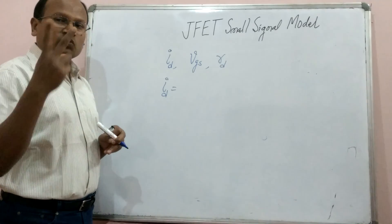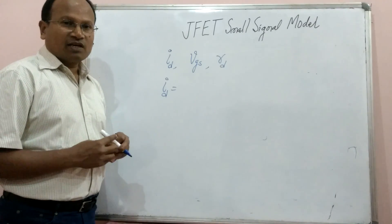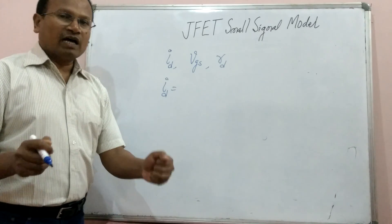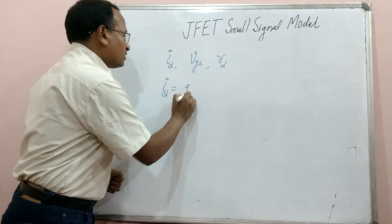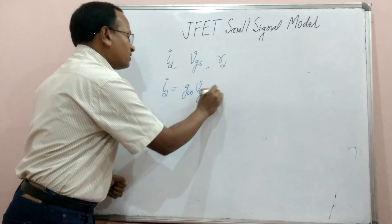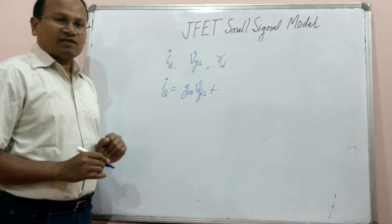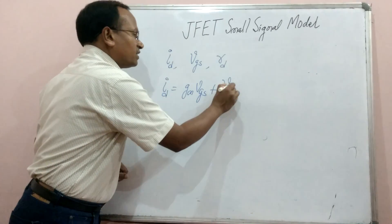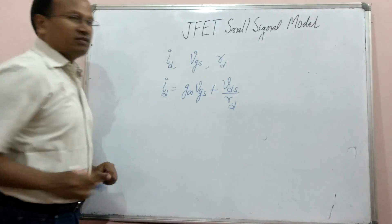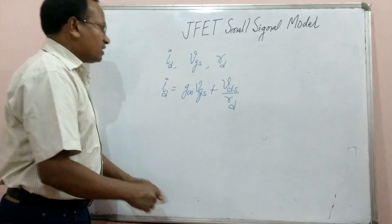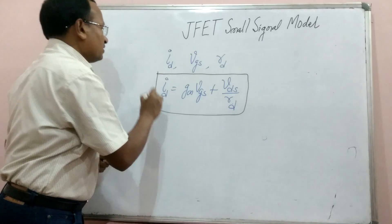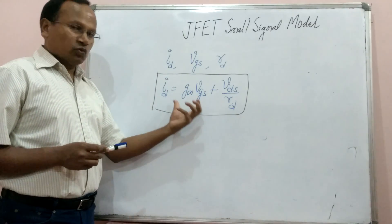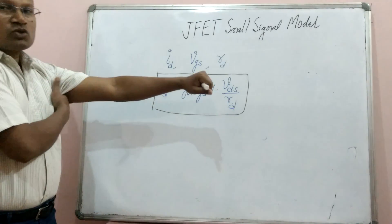The drain current ID is contributed by two things. We know JFET is a voltage-controlled device. VGS always affects the drain current, and that component we write as: ID = GM·VGS. The second component arises due to the small drain resistance RD and drain-to-source voltage, which we write as VDS/RD. So the complete expression for drain current is: ID = GM·VGS + VDS/RD.